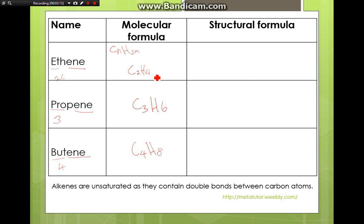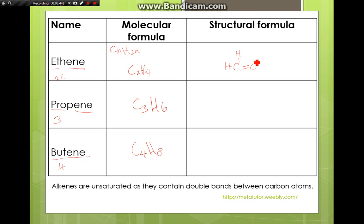Structural formula: for ethene, we have two carbons. I draw the two carbons first. Importantly, the carbons will have a double bond between them — at least one pair. Since each carbon has four bonds, if I look at the left carbon, two bonds are already formed by the double bond, so there will be two bonds for this carbon joined to hydrogen atoms. The carbon on the right also has two bonds formed, and the other two bonds will be joined to hydrogen. So this is the structural formula for ethene.